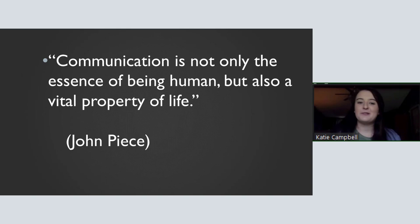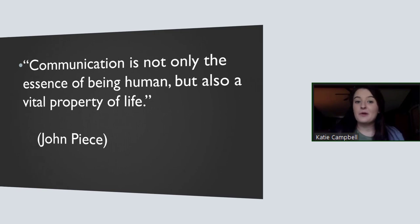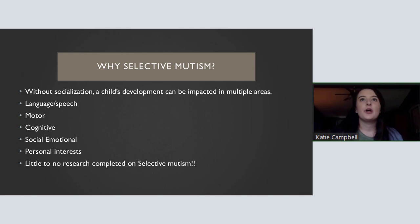You might be wondering why I chose the topic selective mutism. In childhood development and early intervention classes, we're taught that child development can be impacted in multiple areas such as language and speech, motor, cognitive, social, and emotional. If these needs are not met, then the child's development can be impacted in a series of ways.